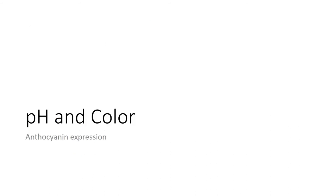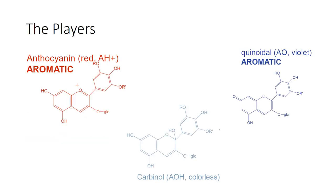Moving on to pH and color. The examiner's report mentioned anthocyanin expression and extractability. The key color compounds are: the red flavylium form of anthocyanin, the blue quinoidal form of anthocyanin, and a colorless carbonyl form of anthocyanin. Actually, the majority of anthocyanins exist in that colorless carbonyl form. So even if a wine expresses a lot of color, the majority of pigments are not expressing any color at all.